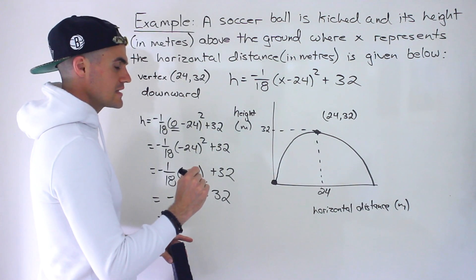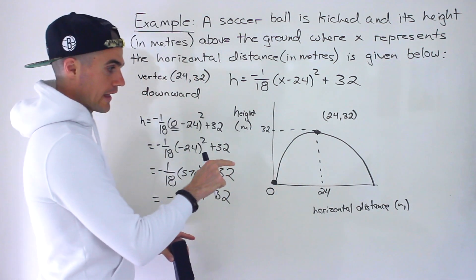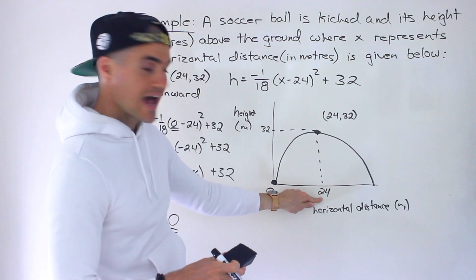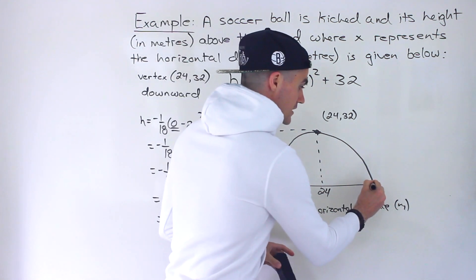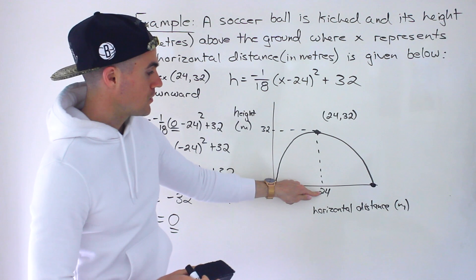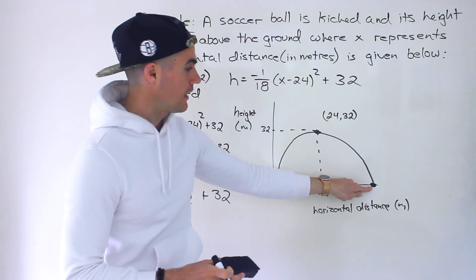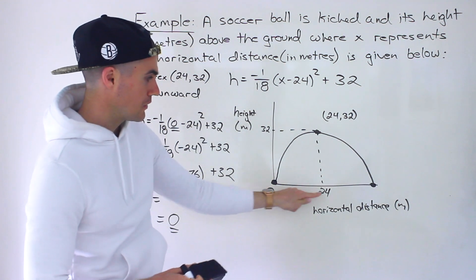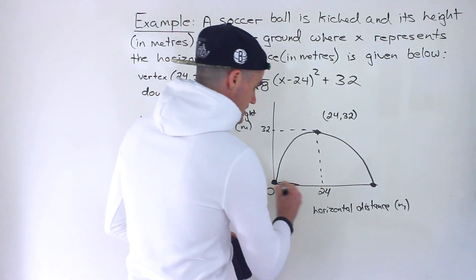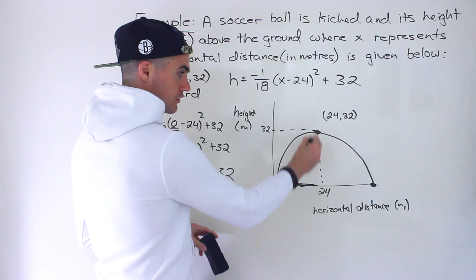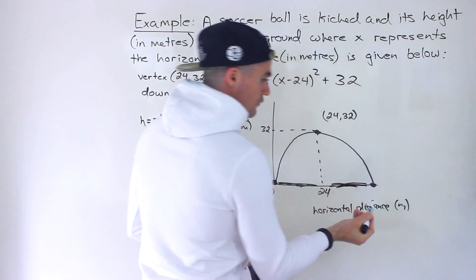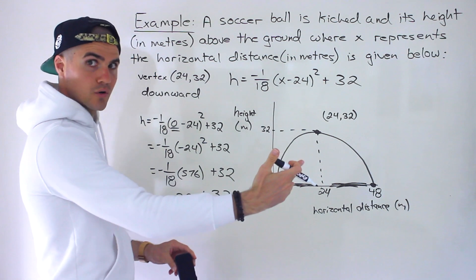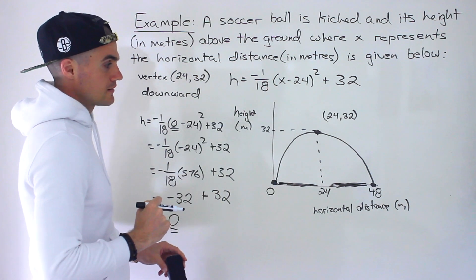It's fairly easy to tell where the ball is going to land. We have an intercept at zero, and we know the axis of symmetry is at 24. Because the parabola is symmetrical, the axis of symmetry is always the halfway point between the intercepts. Since one intercept is at zero and the halfway point is 24, the distance from zero to the axis is 24, so the other side is also 24. Therefore 24 plus 24 gives us 48 — the ball lands at a horizontal distance of 48 meters.